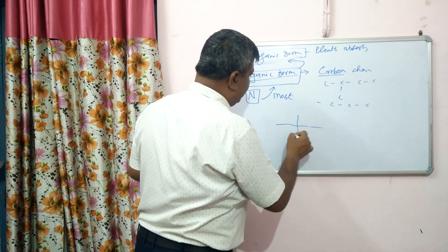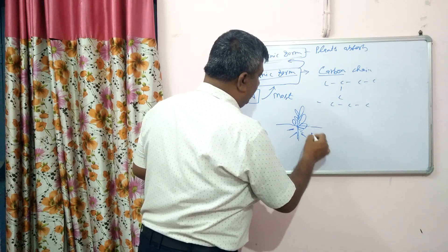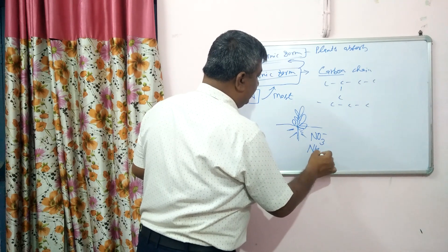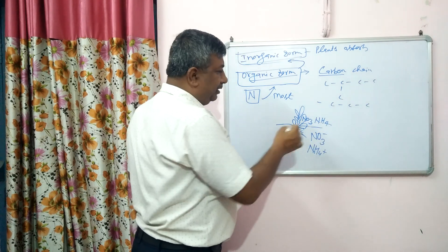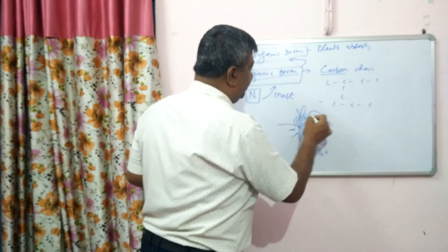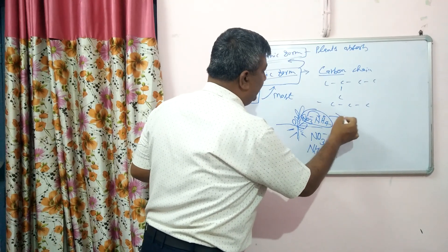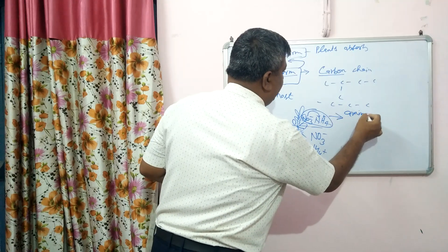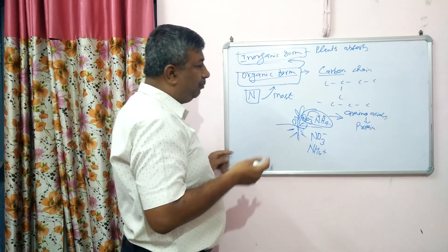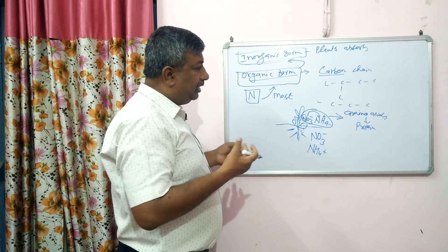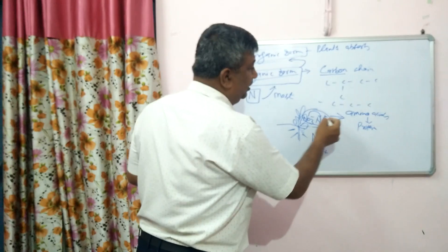In simple terms, the plant absorbs nitrogen in inorganic form — either nitrate or ammonium ion. If nitrate is absorbed, it is converted into ammonium ion inside the plant. Whether nitrate or ammonium, they are then converted first into amino acids, and then those amino acids are converted into protein. Other organic forms of nitrogen in the plant may be chlorophyll, DNA, RNA, ribonucleic acids, and enzymes, but most nitrogen is present as protein.